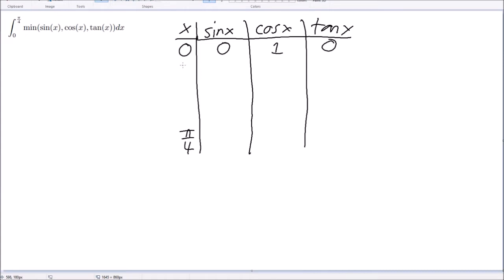To pi over 6, we get 1 half, root 3, and then this becomes 1 on root 3. Okay, root 2, root 2, this is 1, okay.